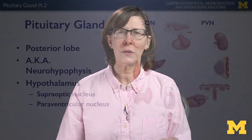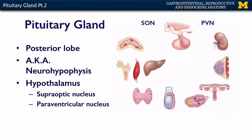The pituitary gland has two lobes: an anterior and a posterior. In this section, we're going to talk about the posterior pituitary gland, also known as the neurohypophysis. Sometimes the pituitary gland as a whole is referred to as the hypophysis. The posterior pituitary gland is this section here.